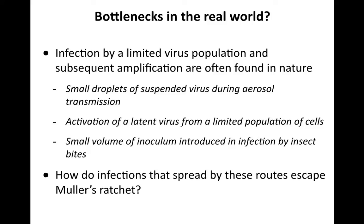Do bottlenecks happen in the real world? Yes. There are cases where you have infections by a small virus population. For example, during aerosol transmission of respiratory viruses, small droplets do not contain the full diversity of virus populations. Activation of latent viruses from a limited population of cells — a few neurons in peripheral ganglia contain single genomes, and when they reactivate they give rise to virus particles from a single genome. Insect bites can also be bottlenecks, delivering a small volume of inoculum with very few virus particles. So there's plenty of opportunity for bottlenecks in the real world.